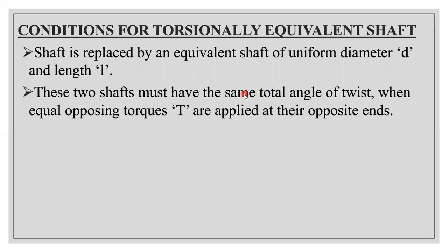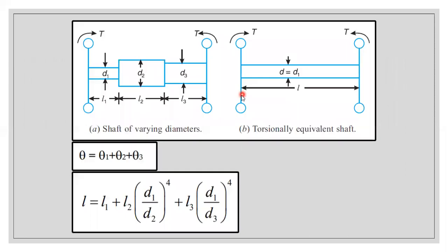Before going into the concept, we will have a glance at two diagrams. The first diagram will represent a shaft of varying diameter, and the second diagram will represent a torsionally equivalent shaft. In the first diagram we will have a variable diameter with different lengths.